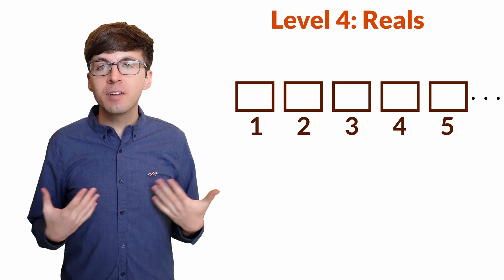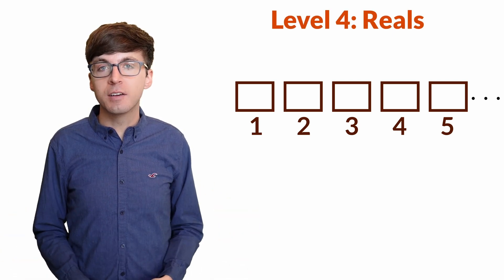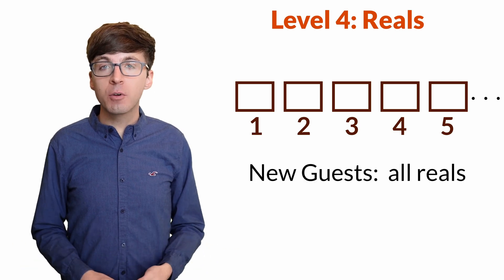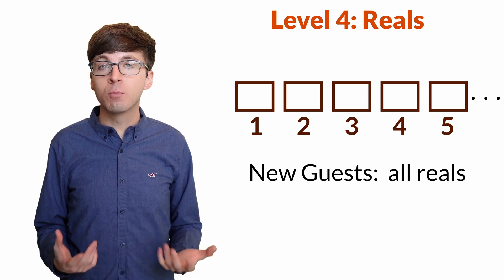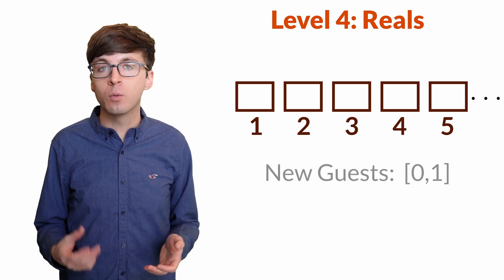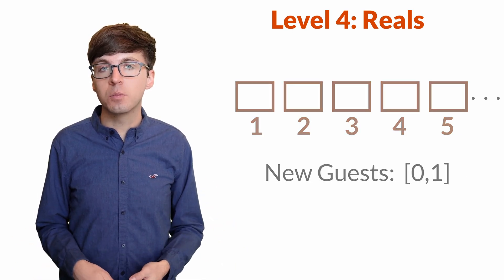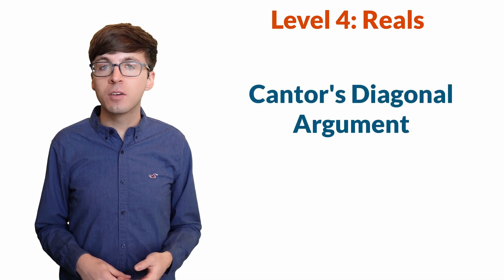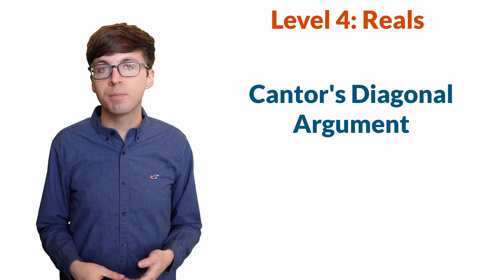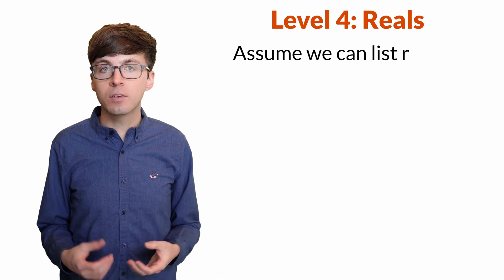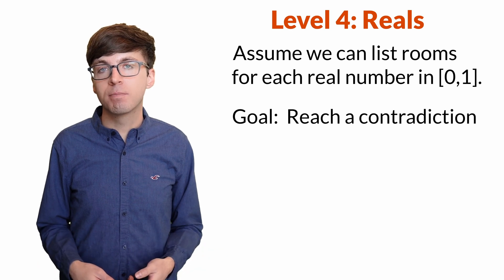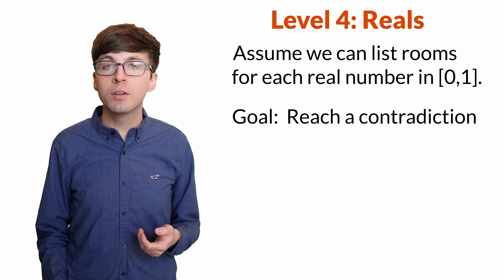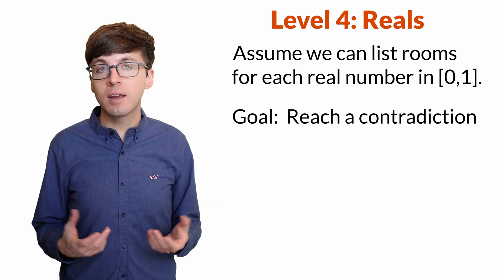For level four, let's finally talk about a set with a larger cardinality: the real numbers. If all the real numbers show up at hotel infinity, we're going to run out of rooms. To keep things simple, let's try to assign rooms to all of the real numbers between 0 and 1, and then see why this isn't possible. This is called Cantor's diagonal argument, which Cantor published in 1891. The proof is by contradiction: we assume that we can list all the real numbers between 0 and 1, and then show that creates a logical contradiction.